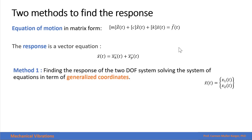Method one is finding the response of the two degrees of freedom system by solving the system of equations using the generalized coordinates — the set of coordinates that we choose to describe the motion of each of the masses of our system. We have already solved some problems using this method for initial conditions.